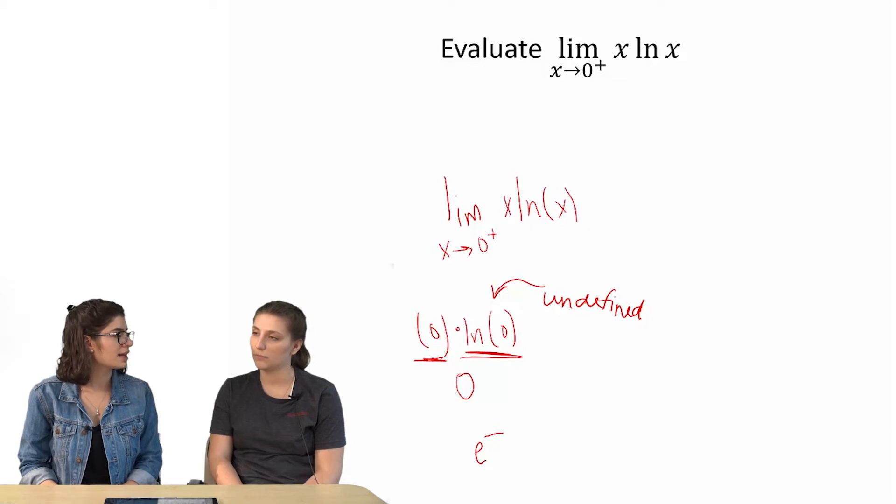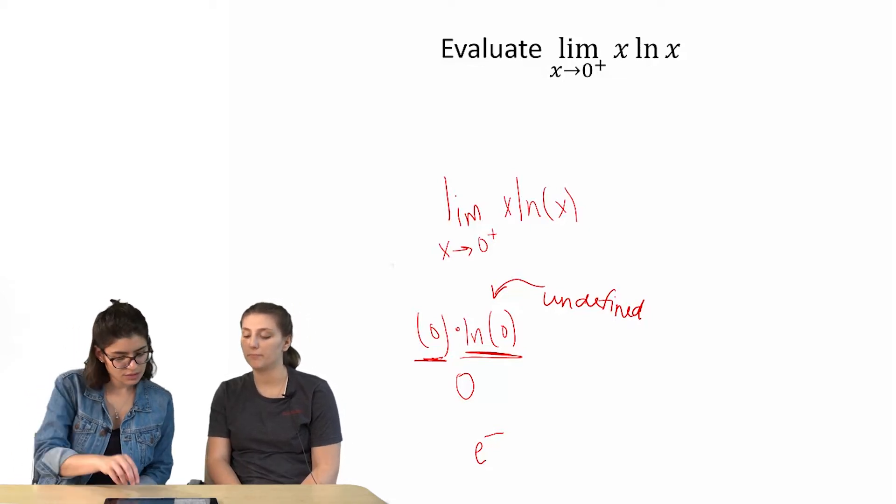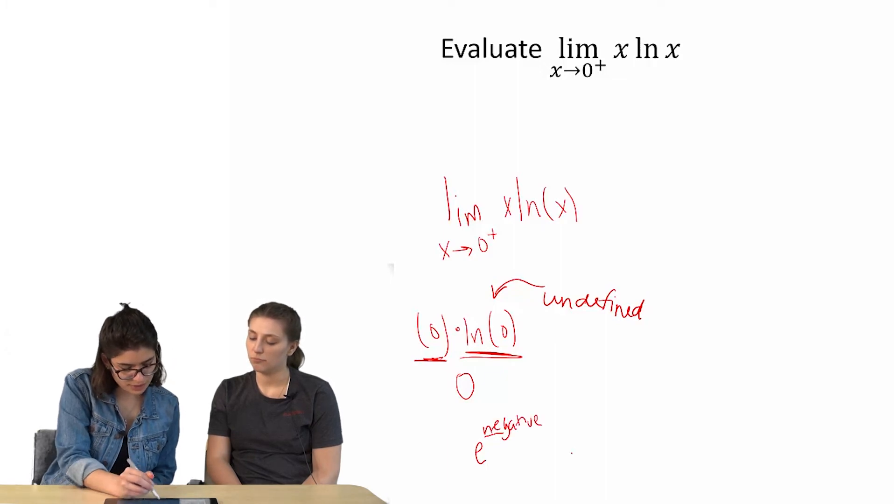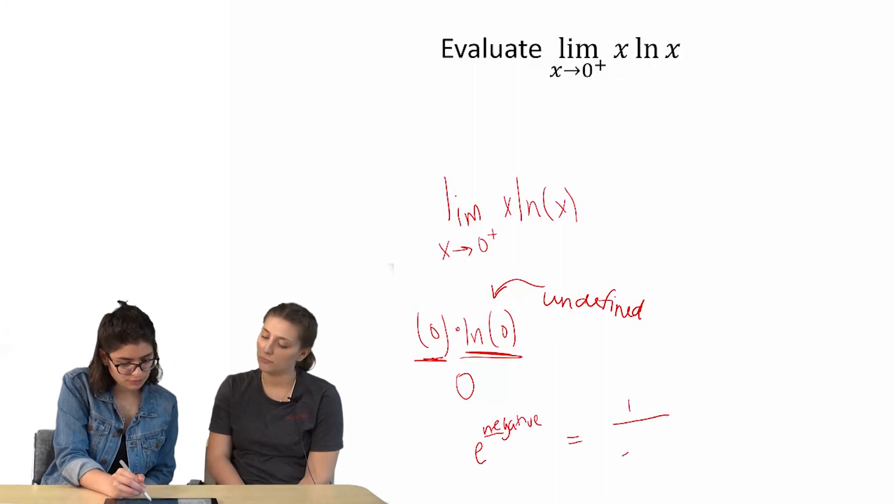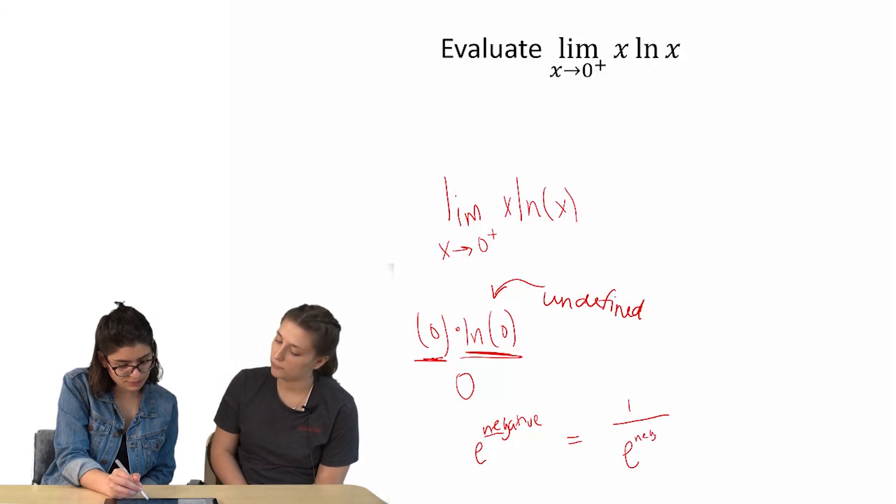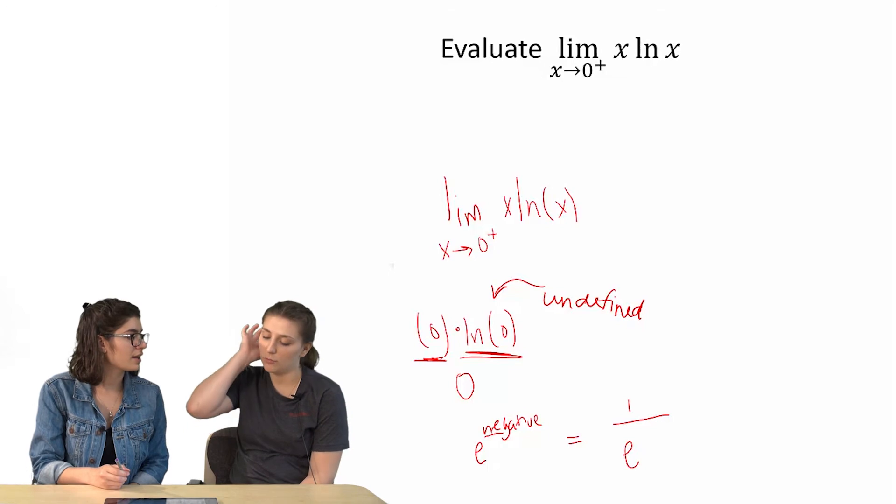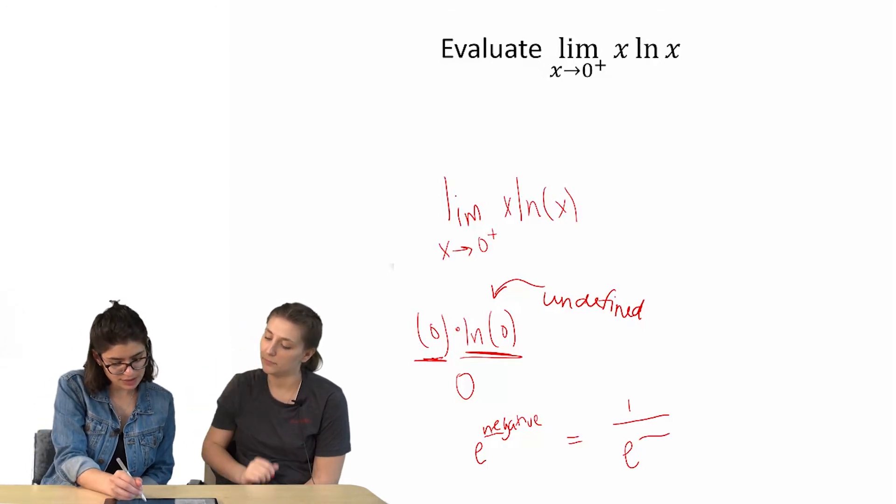Something really negative, right? Right. So you'd have to have something negative. Because then you'd get one over e to the negative. Well, I guess it wouldn't be negative anymore because it's one over that thing, right? So one over e to something.